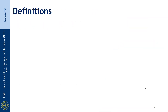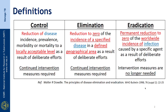Before going to the global strategies, let us start with some of the definitions. Control of any disease is the reduction of the disease incidence, prevalence, morbidity, or mortality to a locally acceptable level as a result of deliberate efforts.